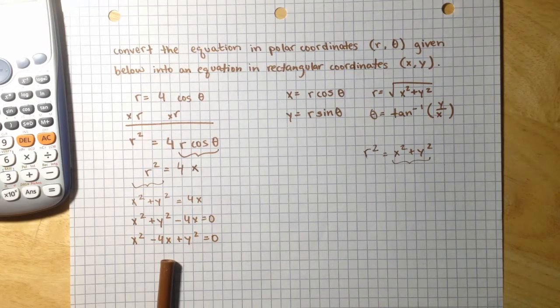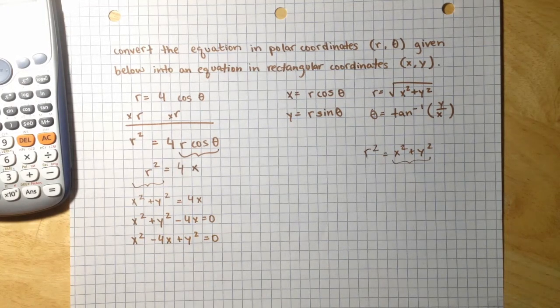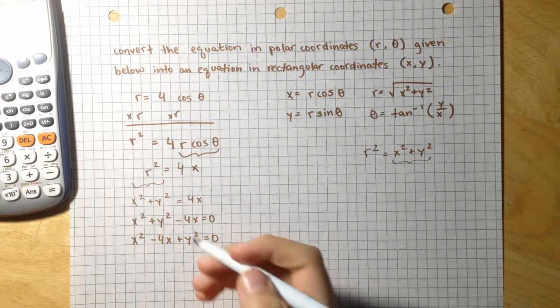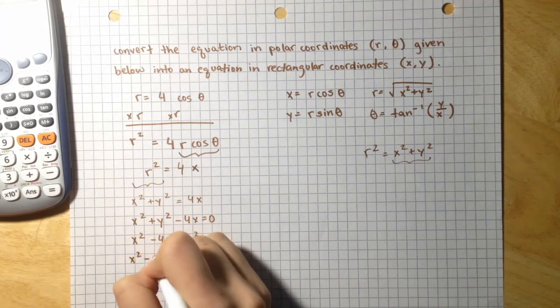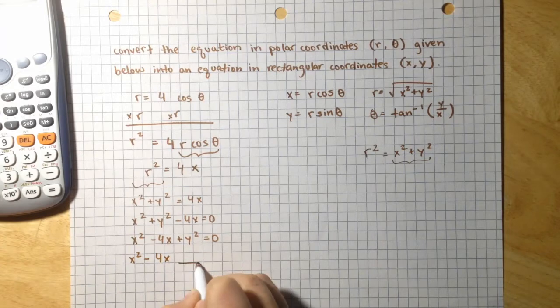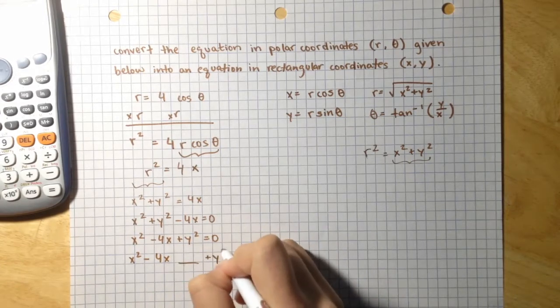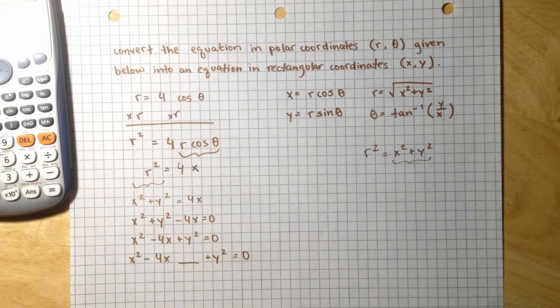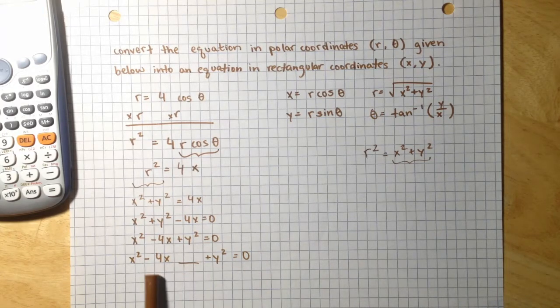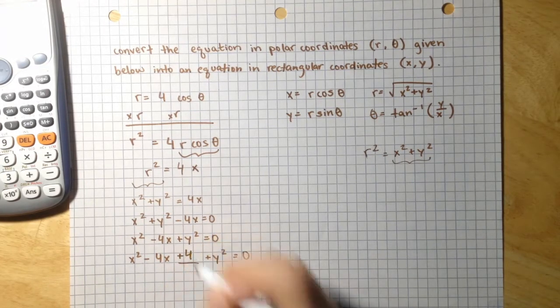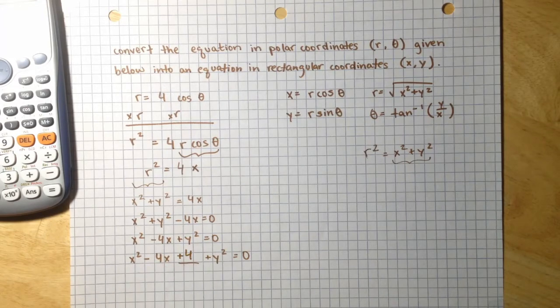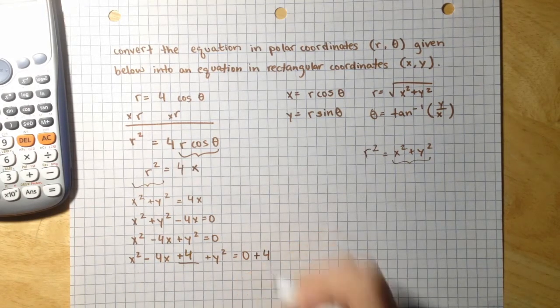We can actually finish off this equation by completing the square and writing an equation for a circle. So x squared minus 4x, and let's leave a gap over here, plus y squared equals 0. So, completing the square. Negative 4 divided by 2 is negative 2, and negative 2 squared is positive 4. So, plus 4. And if we add 4 to this side of the equation, we must add 4 to this side of the equation.